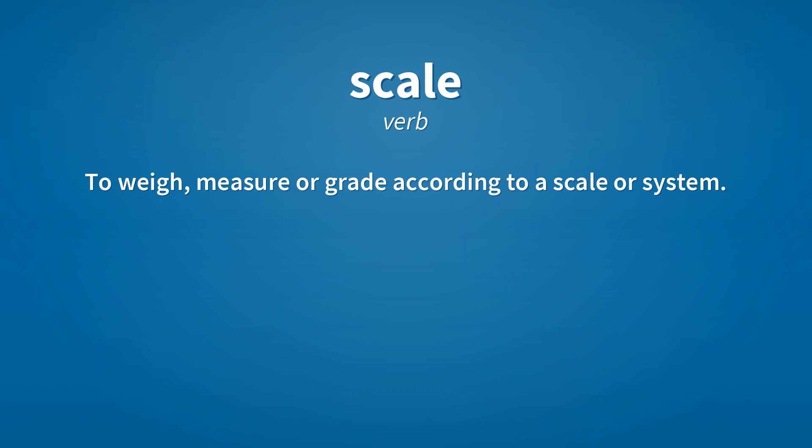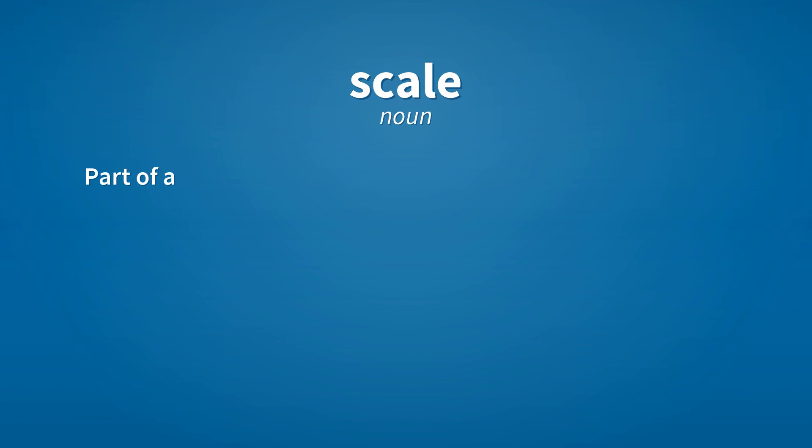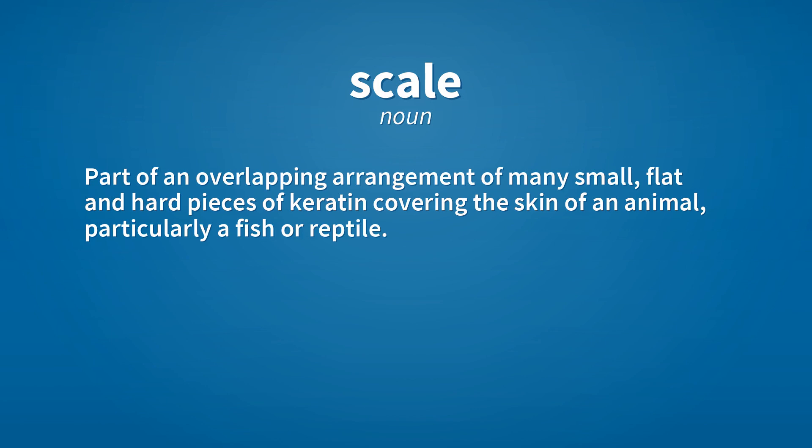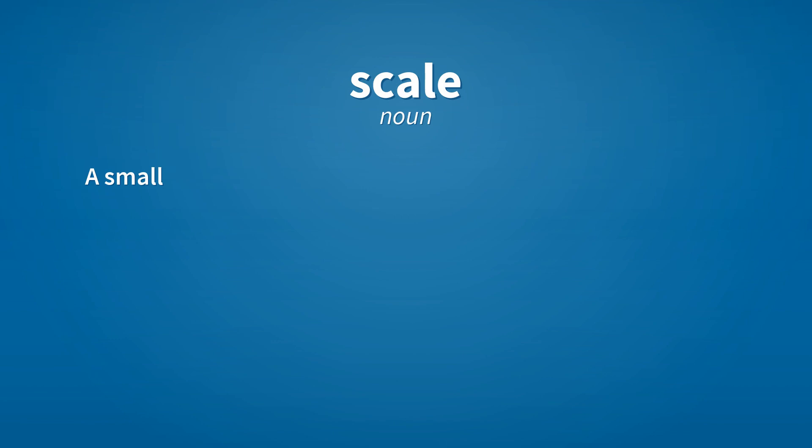Scale. Noun. Part of an overlapping arrangement of many small, flat and hard pieces of keratin covering the skin of an animal, particularly a fish or reptile. Scale. Noun. A small piece of pigmented chitin, many of which coat the wings of a butterfly or moth to give them their color.